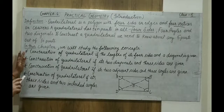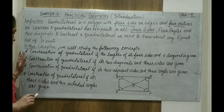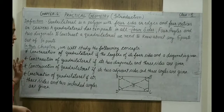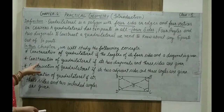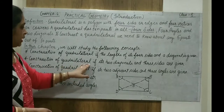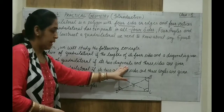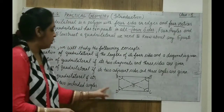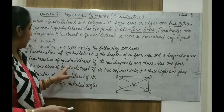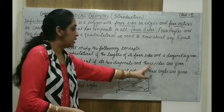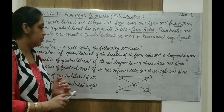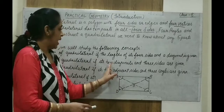Similarly, if the first condition is not satisfied but the second condition is satisfied, we can also construct a quadrilateral. The second condition: construct a quadrilateral if two diagonals — AC and BD — and three sides are given. So at least three sides and two diagonals must be known to us — any three sides and two diagonals.